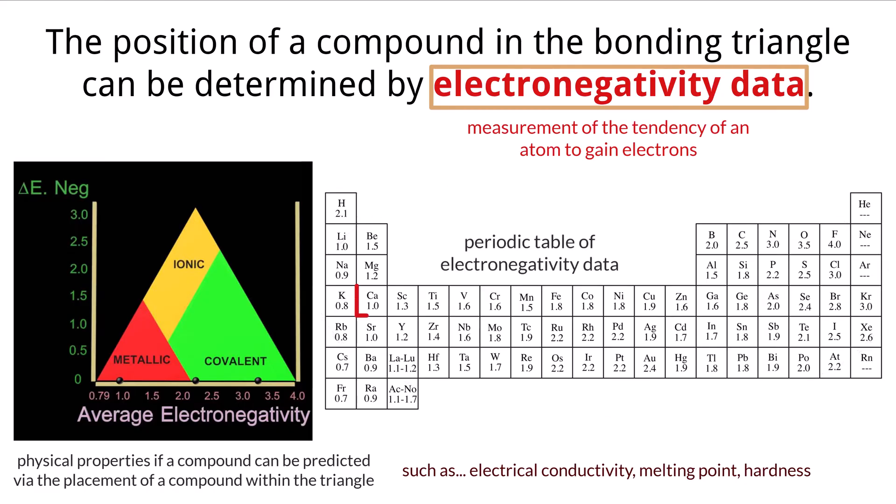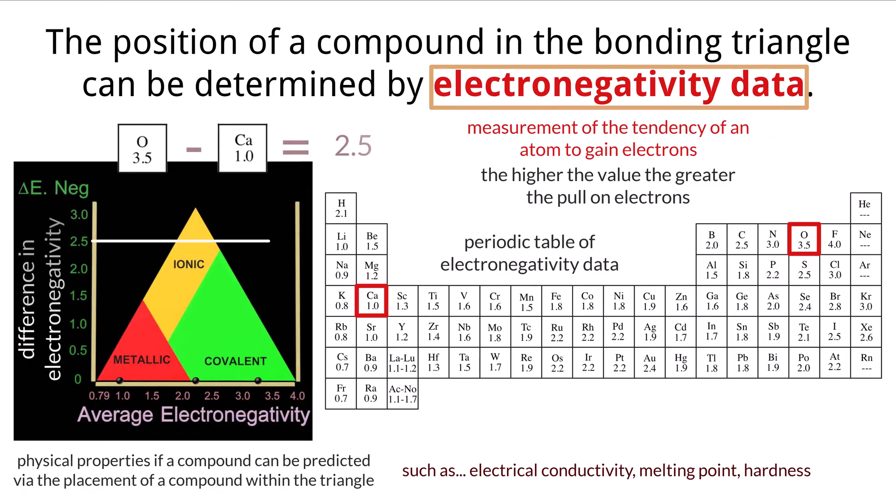If we take a look at calcium, we can see that electronegativity value is 1.0, while oxygen has a value of 3.5. What this means is that oxygen has a much higher tendency to gain electrons than calcium. The higher the value, the greater the pull the element has on electrons. The bonding triangle is made from calculations of electronegativity difference and the average electronegativity of the bonded atoms. This creates a graph where a triangle of results form.